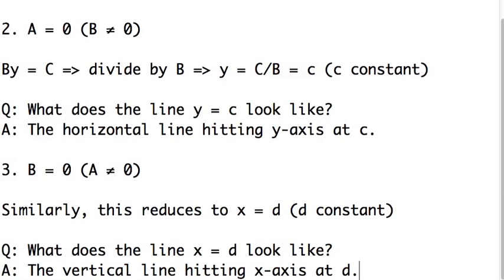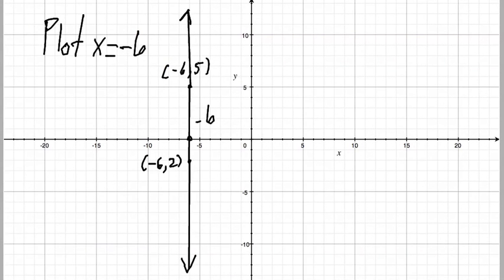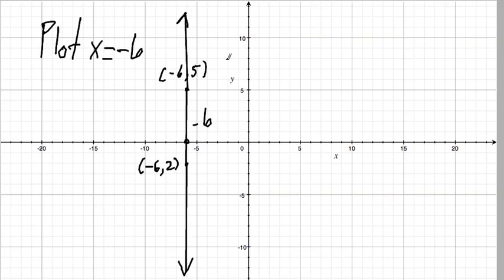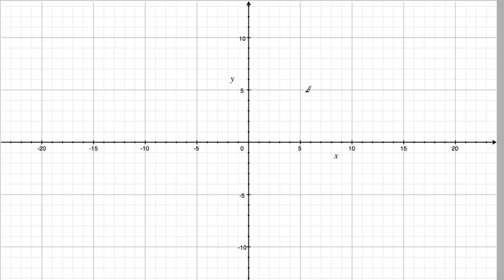Our general answer is that this looks like the vertical line hitting the X axis at D. And again, we have a special case of this. When we look at a particular, the Y axis is a vertical line. It hits the X axis at zero. So it has the equation X is equal to zero. So that is the upshot. These two weird cases give us the vertical lines and the horizontal lines.